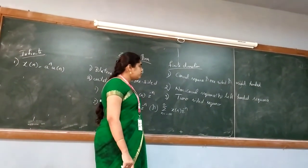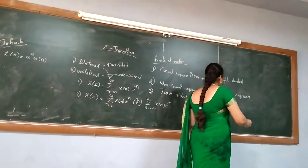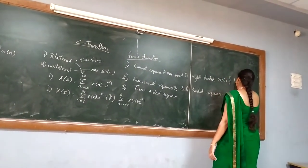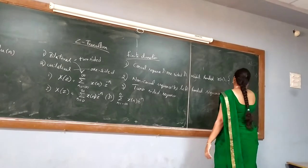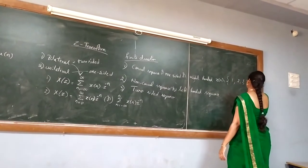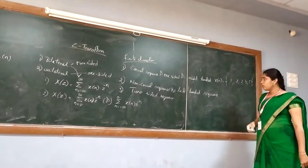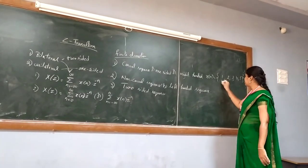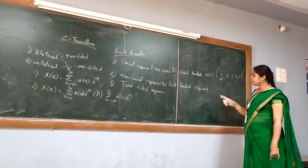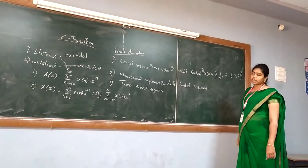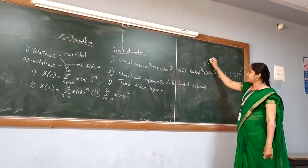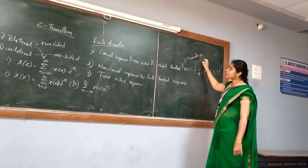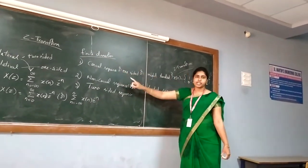For the finite duration causal sequence — one-sided or right-handed — suppose they give you a sequence like x(n) = {1, 2, 3, 4, 5} with an arrow indicating the position of x(0). They will ask you to calculate the Z-Transform. This is our finite duration example.